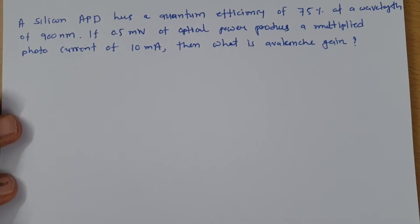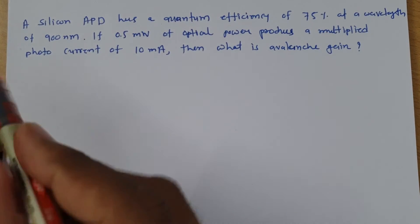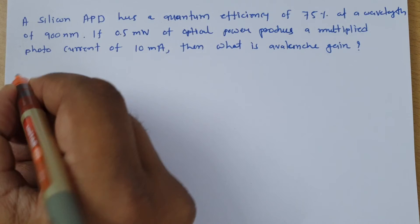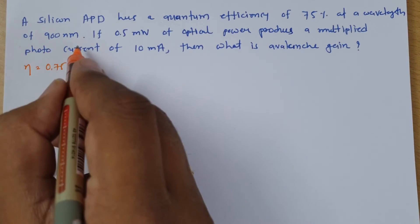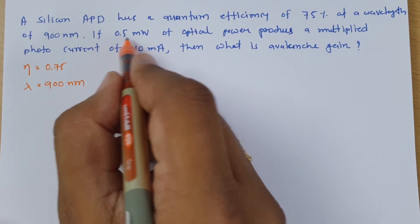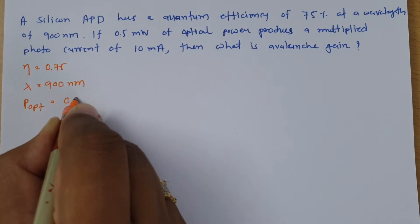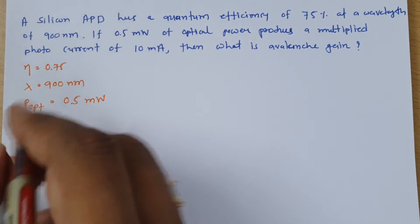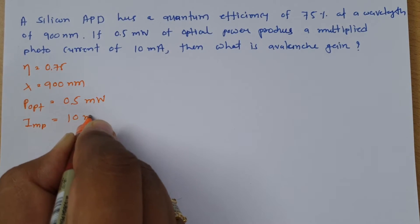Let us have one more problem so it will be more clear. In this problem, a silicon avalanche photodiode has a quantum efficiency of 75%, that is 0.75, at a wavelength of 900 nanometers. An optical power of 0.5 milliwatt is produced, and the multiplied photocurrent is 10 milliampere. The question is to find the avalanche gain.